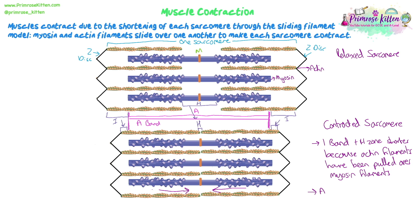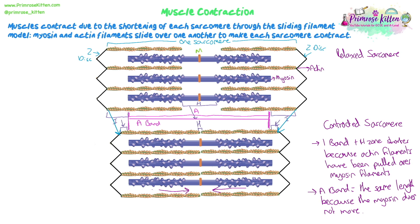The A band does not change — it stays the same length or width. That's because the A band is just where the actin and myosin are together, and the myosin is not moving. It doesn't change shape or shorten; it is fixed and it pulls the actin across it. So the I bands, the areas where there's just actin on the ends, get shorter as the actin moves over the myosin. The A band stays the same because the myosin does not move.